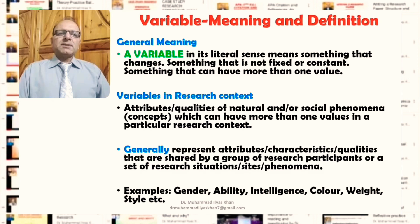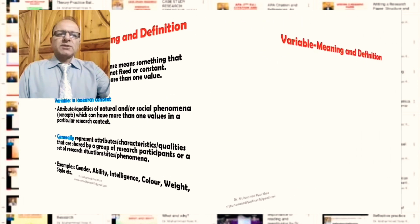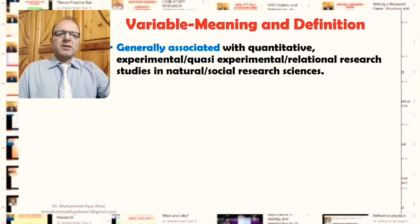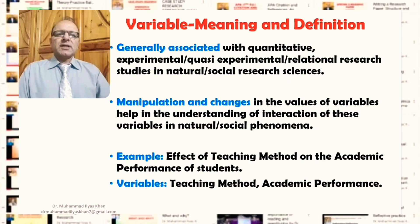Examples of research variables include gender — which can be a variable in social science or even natural science research — ability, intelligence, color, weight, style, and so on. There are numerous other examples of variables used in research in both social and natural contexts.